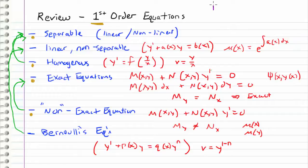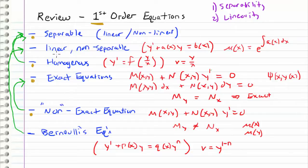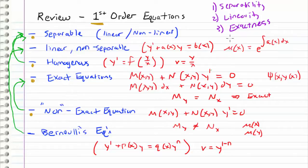Typically the first thing I look for is separability — are you able to separate the variables? Because if you are, that's going to be the easiest way to solve with straight up integration. The second thing I look for is linearity; if it's linear, I'll likely use an integrating factor. If it's not linear, I look for exactness to see if I can solve it as an exact equation or use an integrating factor to make it exact. Finally, if I recognize a single non-linearity like in Bernoulli's equation attached to y to the zeroth derivative, I use Bernoulli's strategy.